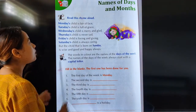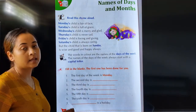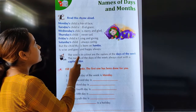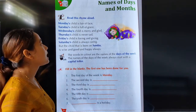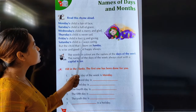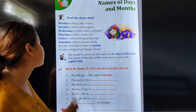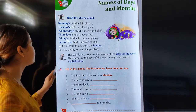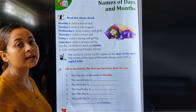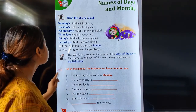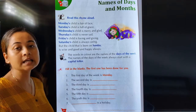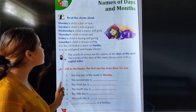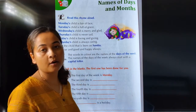The child born on Monday is fair of face. The child born on Tuesday is full of grace. Wednesday's child is merry and glad. Thursday's child is never sad — they are always happy. Friday's child is loving and giving, and Saturday's child is always caring. And the child that is born on Sunday is wise, good and happy always.